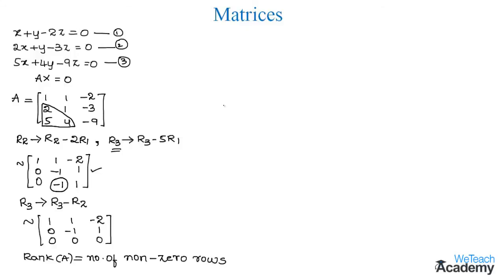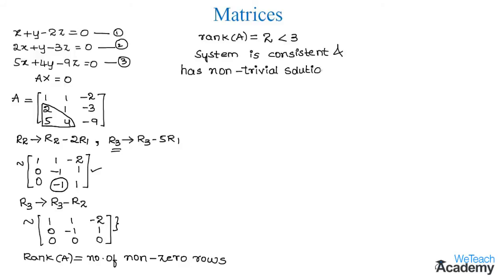The rank of matrix E equals the number of non-zero rows, which is 2. Since the rank of matrix A equals 2, which is less than 3, the system of equations is consistent and has non-trivial solutions — that is, it has an infinite number of solutions.